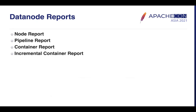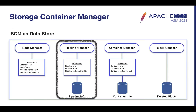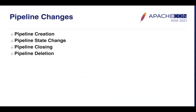The reports sent by data nodes include node report, pipeline report, container report, and incremental container report. Pipeline Manager manages the data pipelines used by clients to read and write data. Pipelines are created and managed by Pipeline Manager; when a pipeline becomes unstable or unresponsive, it is destroyed and a new one is created. Pipeline Manager stores pipeline-level information in a pipeline table in RocksDB. In SCM HA, RATIS replicates all pipeline-related information across all SCMs. Pipeline-level changes include pipeline creation, stage change, closing, and deletion.